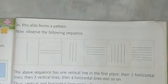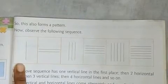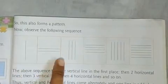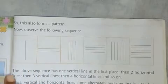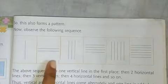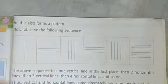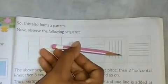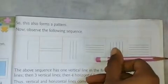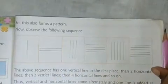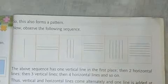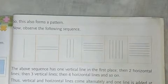In the same way, see this pattern: first one vertical line, then two horizontal lines, then three vertical lines. One by one the number of sticks or lines is increasing. They are alternating between vertical and horizontal — vertical first, then horizontal, then vertical, then horizontal, and so on. So the sequence goes: one, two, three, four, five, six, following this order.